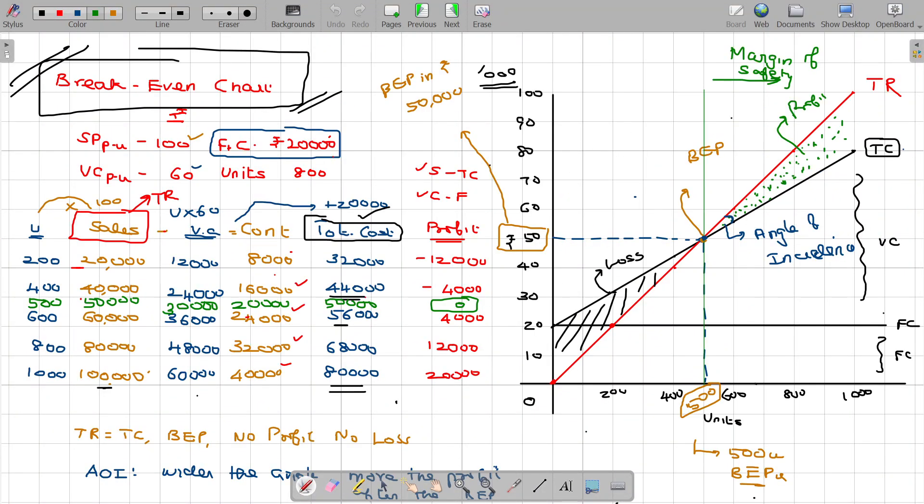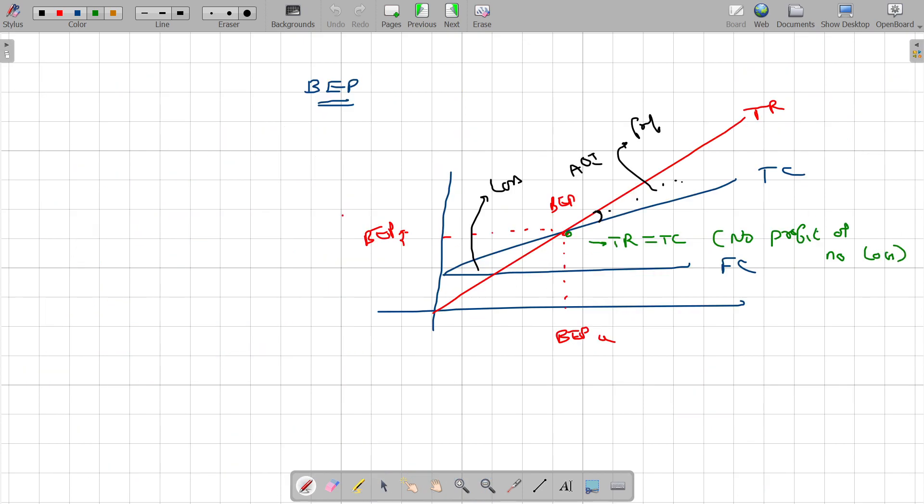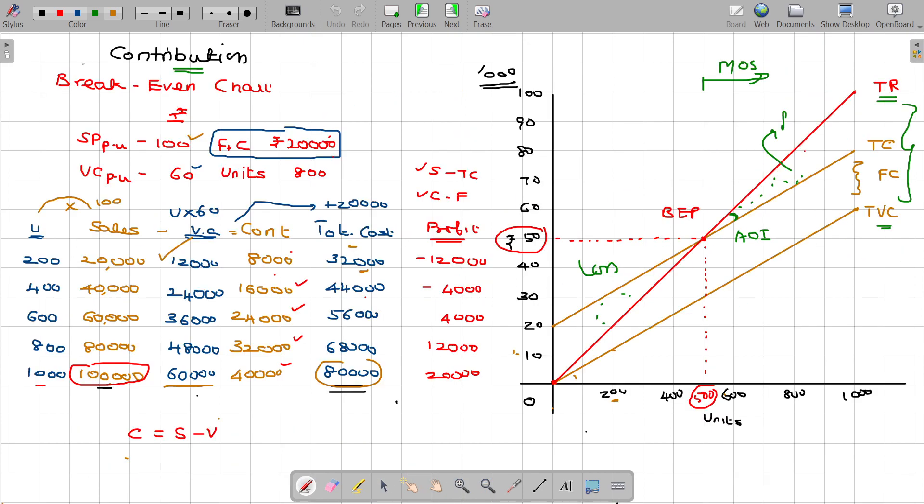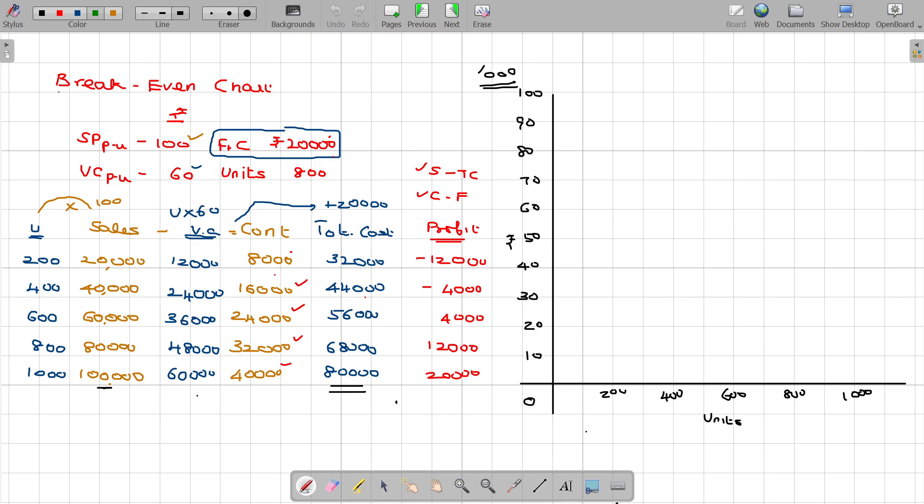We have seen the break-even point, break-even chart as well as the break-even chart based on contribution, contribution break-even point and we have another variant in that profit volume graph. Clear? Profit volume graph.